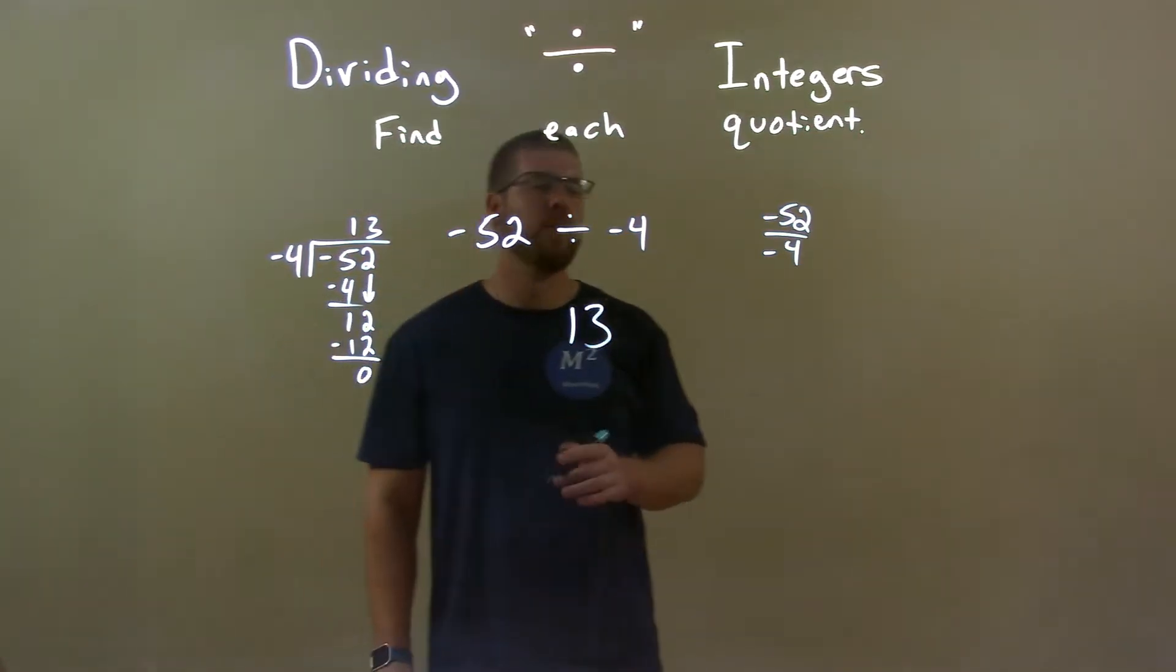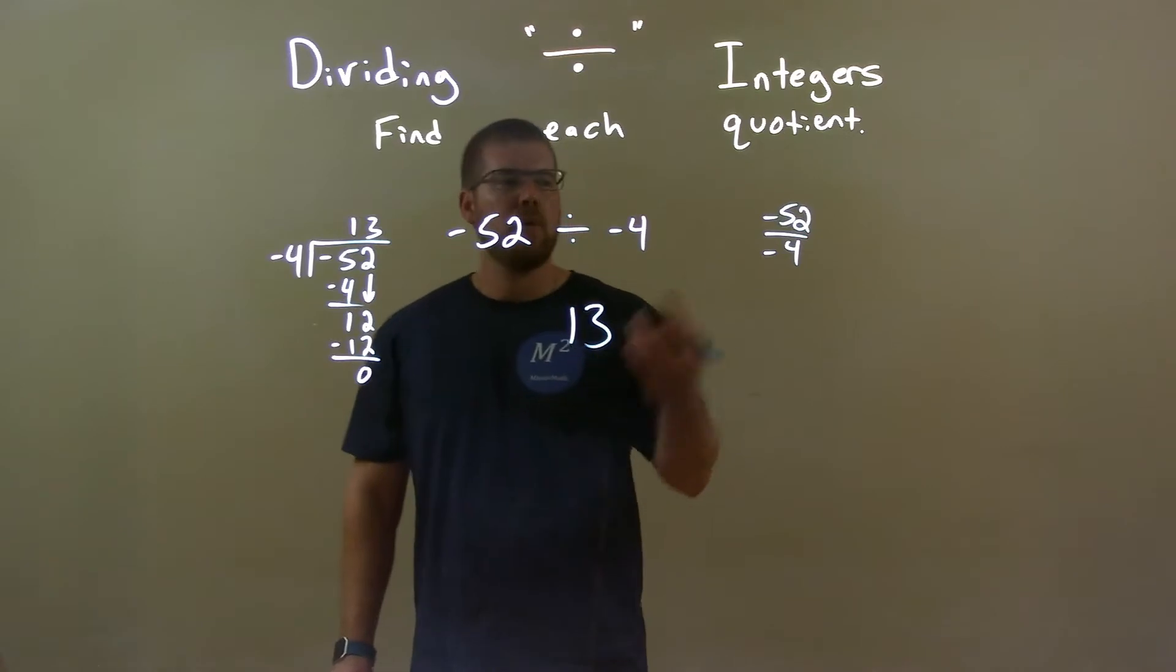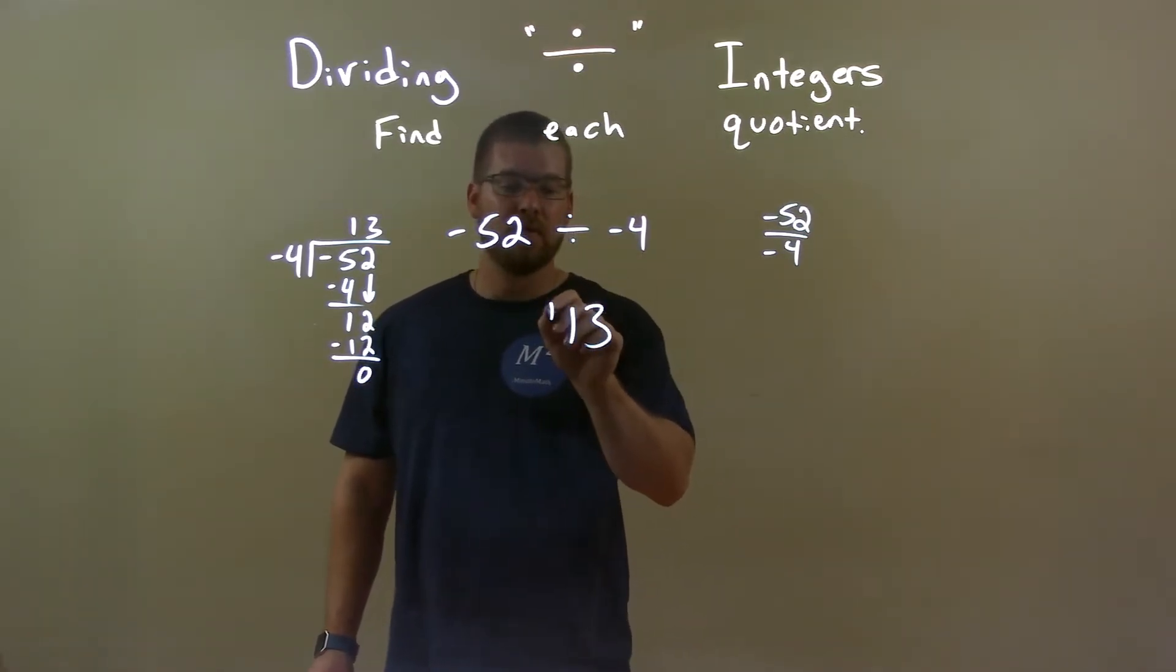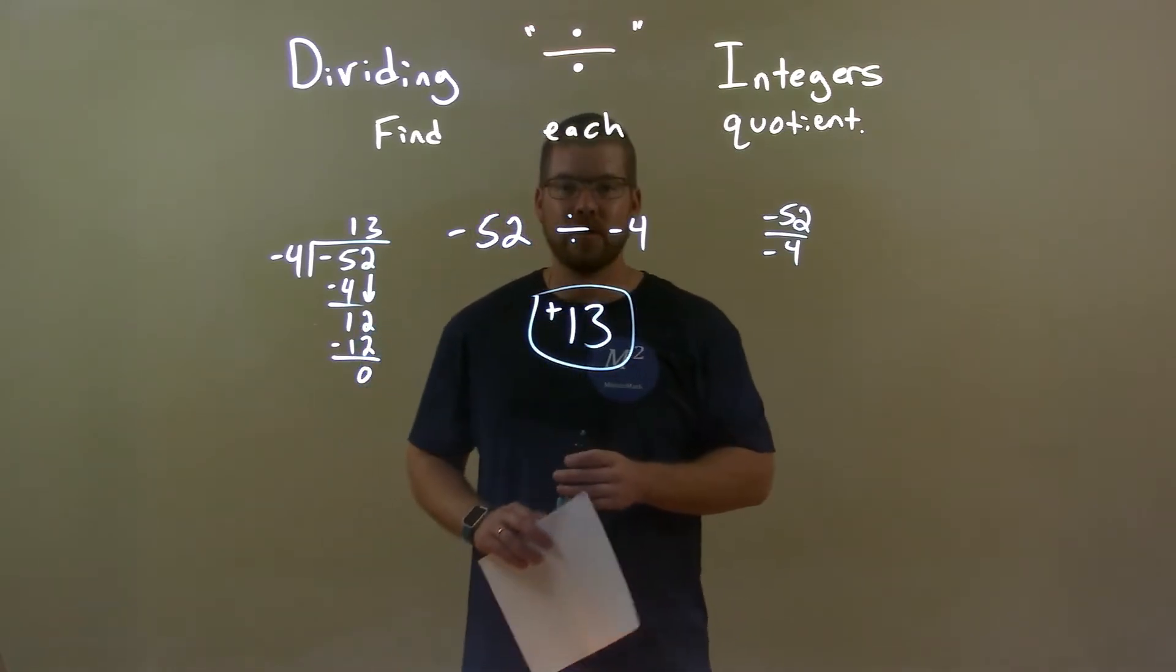But now I need to worry about the negatives. We have a negative divided by a negative, which we know is going to be a positive. So our final answer here is just positive 13.